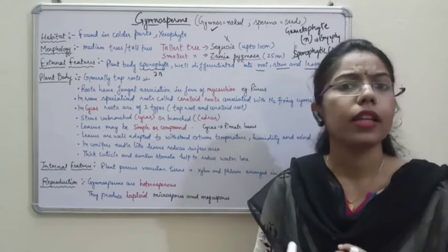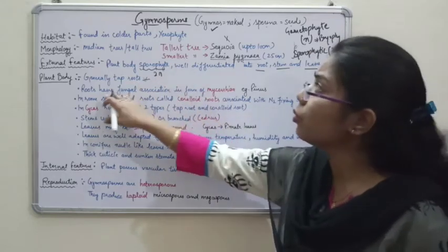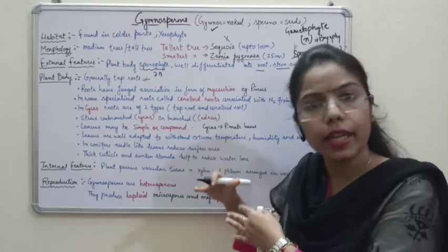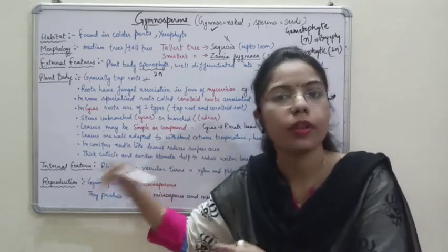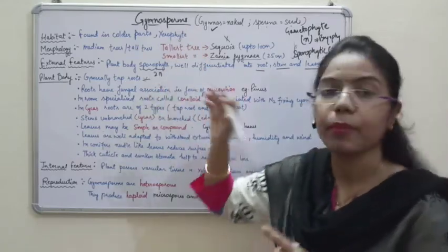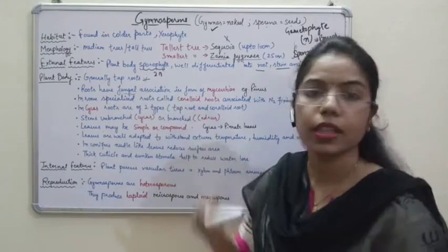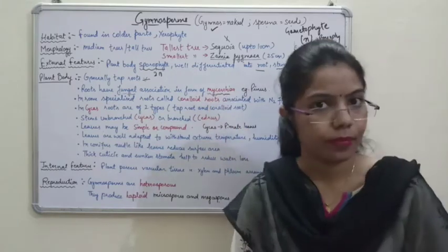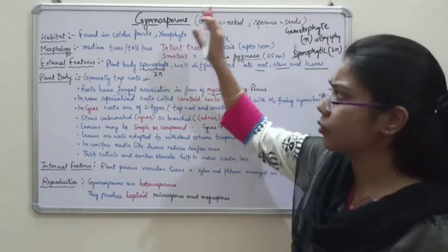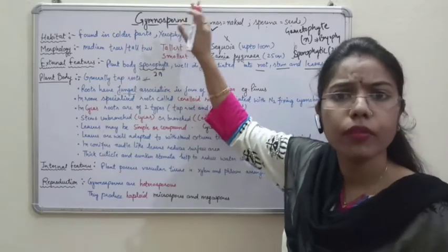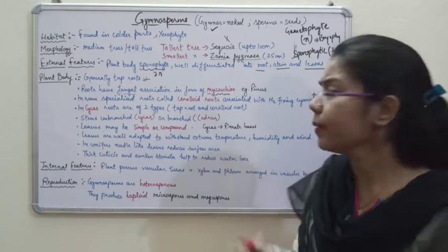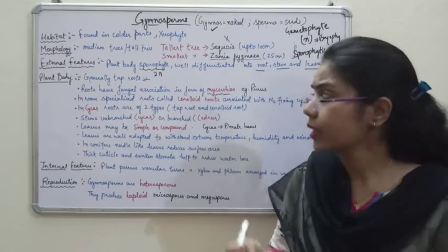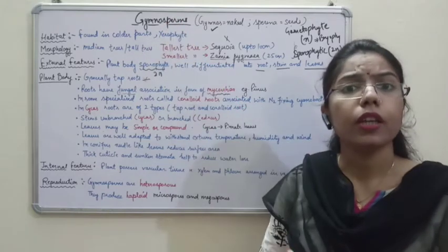Gymnosperms and angiosperms are the higher plants. When the roots of these higher plants make an association with fungus, it will form mycorrhiza. Mycorrhiza is a symbiotic association between fungi and the roots of gymnosperm — for example in Pinus. We have studied that mycorrhiza is important for uptaking nutrition, helping gymnosperms grow very well. For Pinus seed germination, fungal association helps nutrition more because it increases the surface area, leading to more absorption of water, minerals, and nutrients.